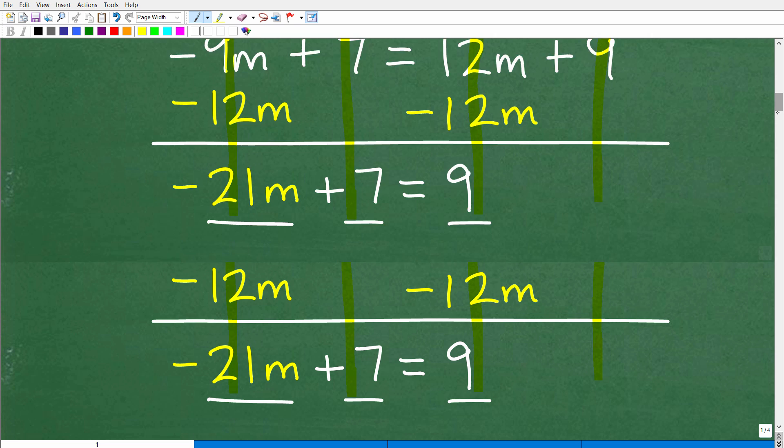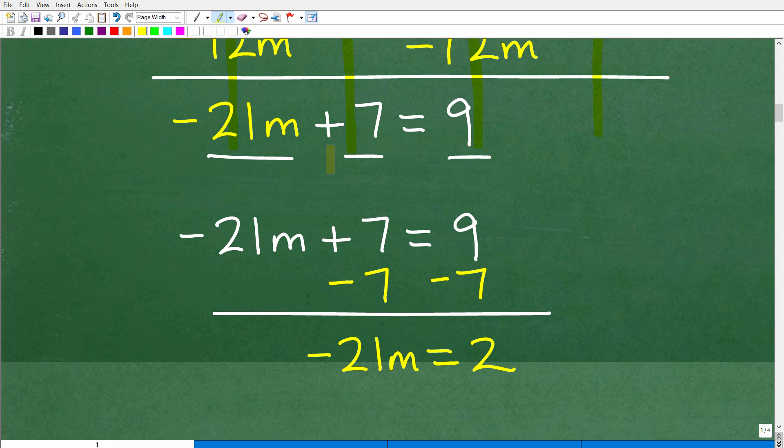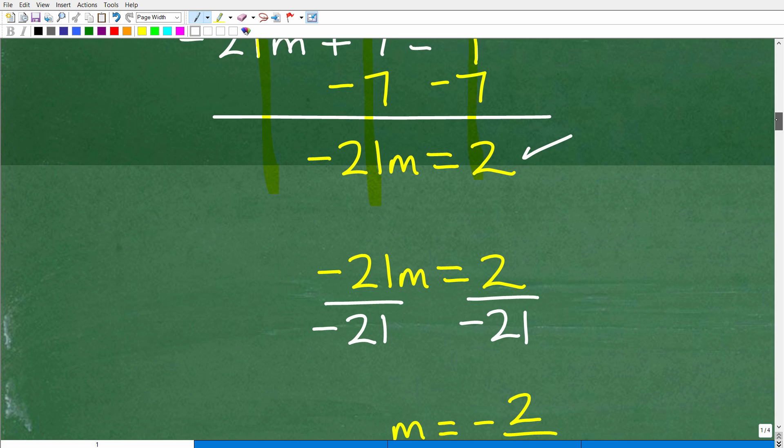All right. So we're getting very close to the answer here. But we can't do anything until we get this number moved over here with this 9. So let's go ahead and move this 7 to the right-hand side of the equation. Remember, we need to get all the variables to the left, which we do now have all the variable terms to the left. We have negative 21m, but we don't have all the numbers to the right yet. So let's move this 7 over to the right. So how can we do that? I have a positive 7. So if I subtract a 7, that 7 goes away. But I need to do it to both sides of the equation. So again, we're going to add down like so. So negative 21m plus nothing is negative 21m. Positive 7 minus 7 is 0. That goes away. 9 minus 7 is 2. And there we go. We have negative 21m is equal to 2.